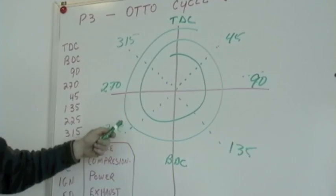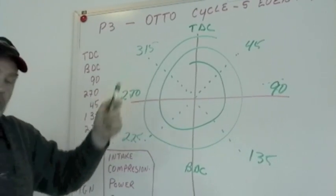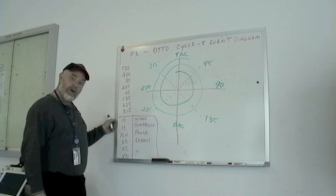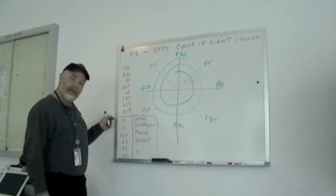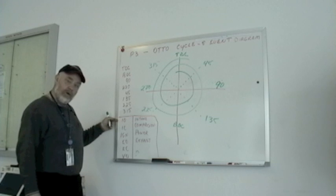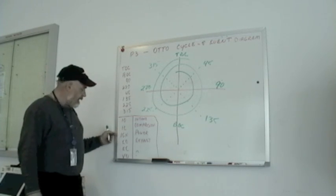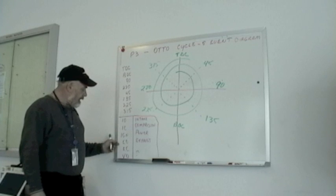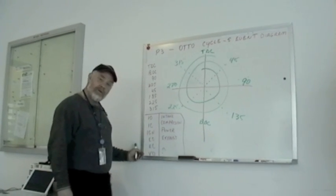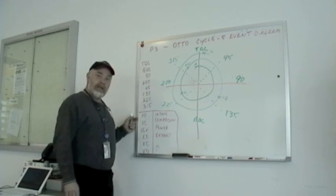Step four: now we're going to place the events. IO indicates intake valve open, IC indicates intake valve closed, ignition, exhaust open, exhaust closed, and valve overlap. These are the events on the diagram.